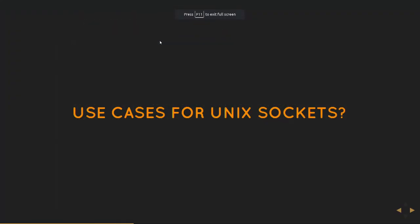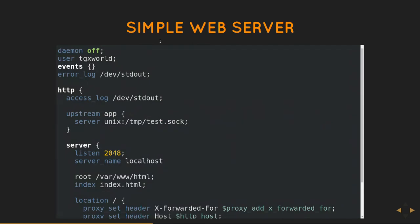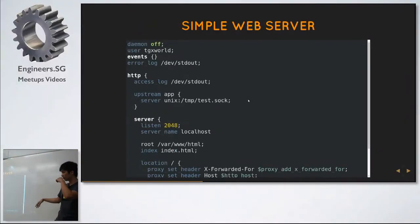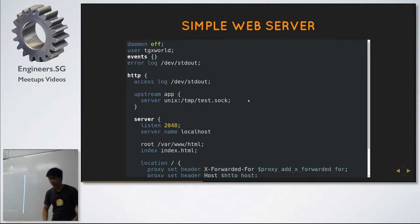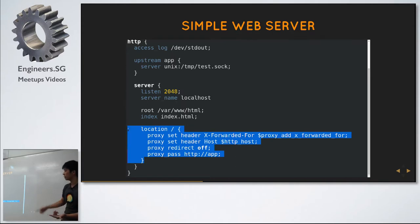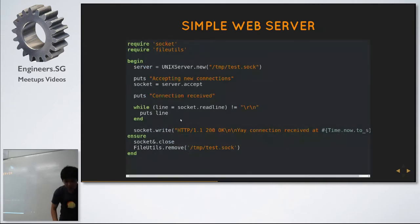So what are some use cases for this pattern — where would you need to exchange data between two processes? The first one is a simple web server. Here's a sample Nginx configuration file. The key point is that in Nginx, most people use it as a proxy or load balancer and forward requests to Unicorn, Puma, or whatever Ruby web server they're using. You can actually give Nginx a Unix socket file path and forward any received request to the web server that way.